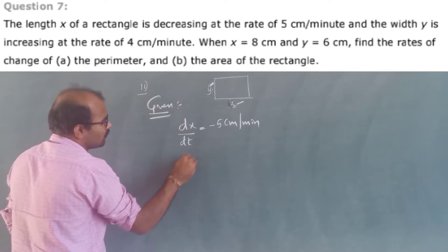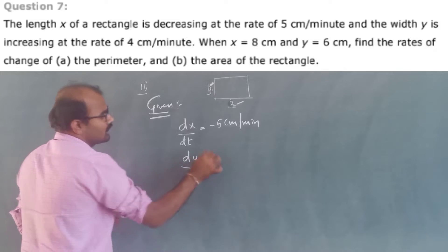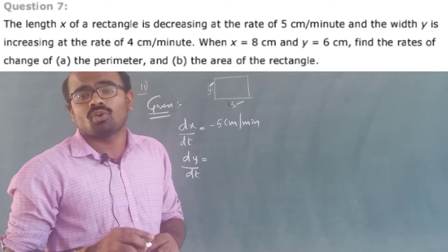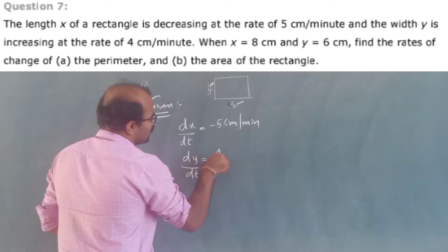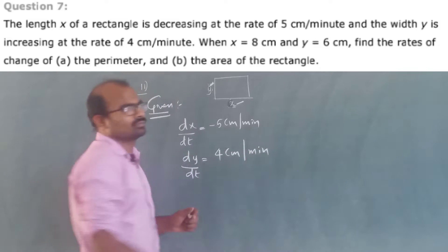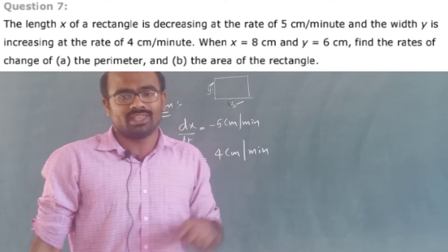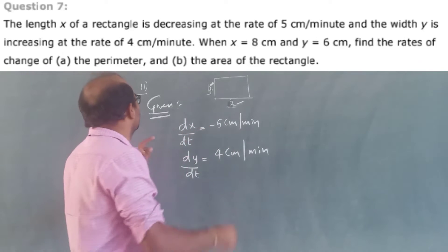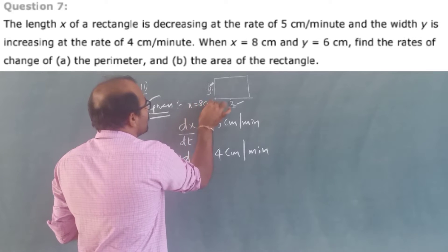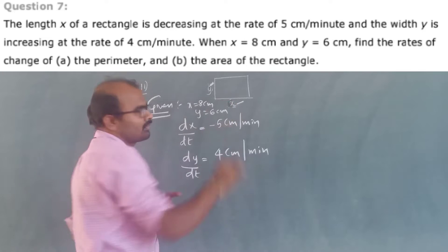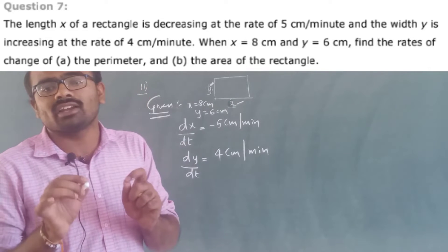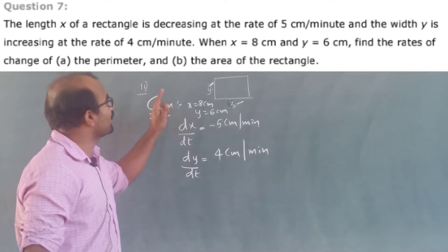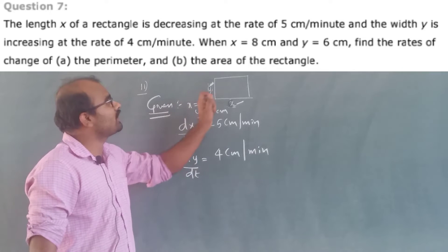Width y is increasing at the rate of 4 cm per minute — dy/dt = 4 cm per minute. When x equals 8 cm and y equals 6 cm, find the rate of change of perimeter and area of the rectangle.